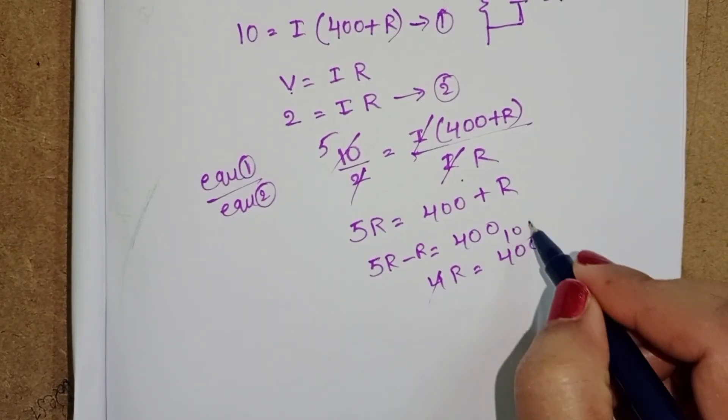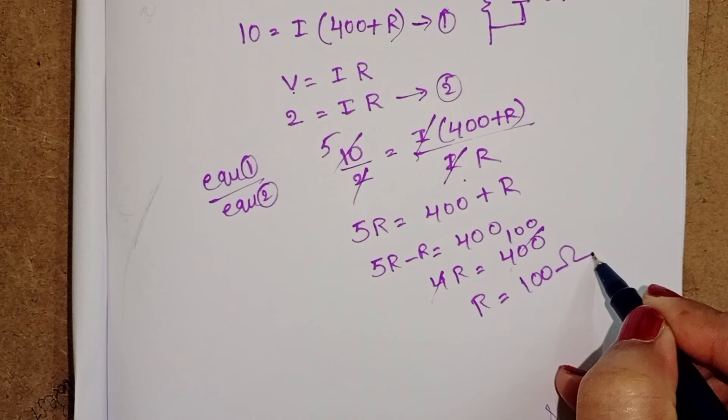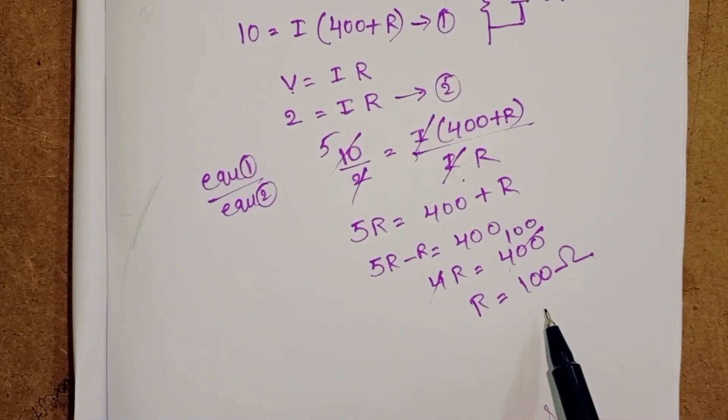4 1's, 4 100's. R equals to 100 ohm. Resistance is equals to 100 ohm.